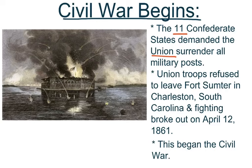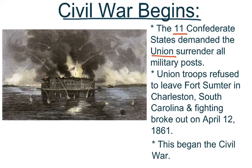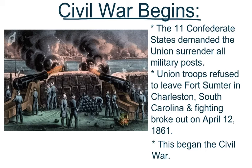The Union troops refused to leave Fort Sumter in Charleston, South Carolina. Here is a picture of Fort Sumter. As a refusal of the Union troops leaving, cannons were being shot towards the Union flag and Fort Sumter. Fighting broke out on April 12, 1861, and the South was going to defend their lands in South Carolina. Here's another picture of the South attacking Fort Sumter, which was on an island. This marks the beginning of the Civil War.